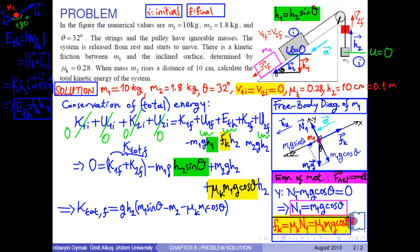Now, we put the corresponding numerical values into this equation. As a result, we calculate the final total kinetic energy of the system as 1.1 joules.